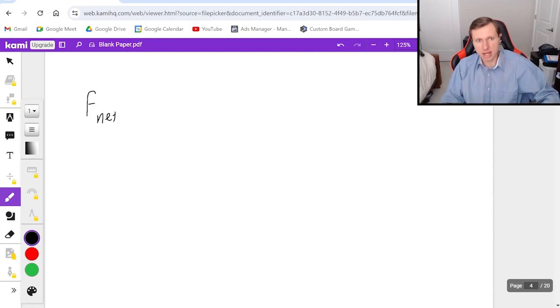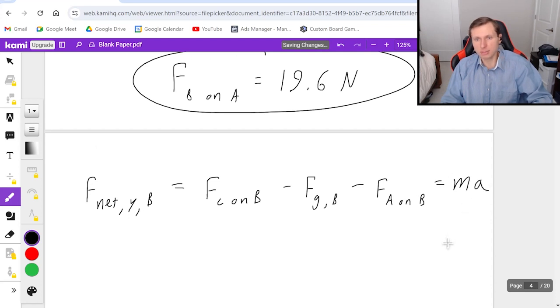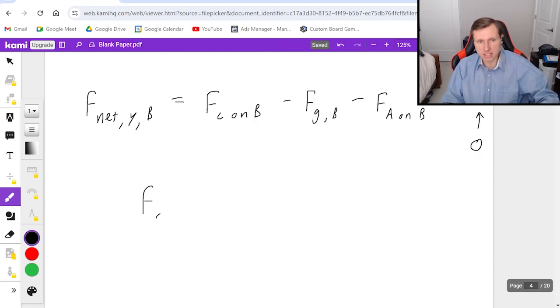And so that's going to be F_net_y,b is equal to all the forces going up, which is the force of c on b minus the forces going down. There are two forces going down, and they both get minus signs, F_g_b and force of a on b. And again, that's equal to mass times acceleration. Once again, this acceleration is zero because the boxes are not moving. So then simplifying this force of c on b minus force of gravity on b. That's mass times gravity for box b. Mass b is five kilograms times g is 9.8. And then minus a on b we just found to be 19.6. That equals zero.